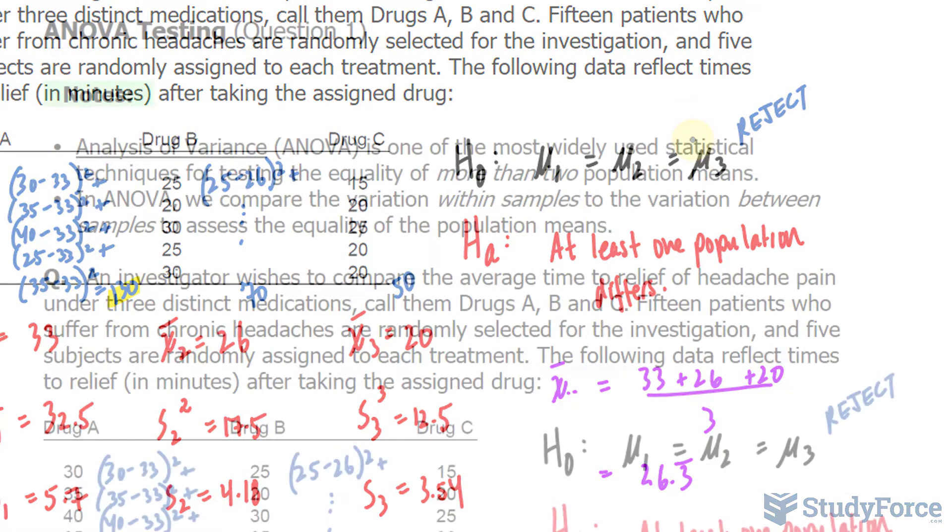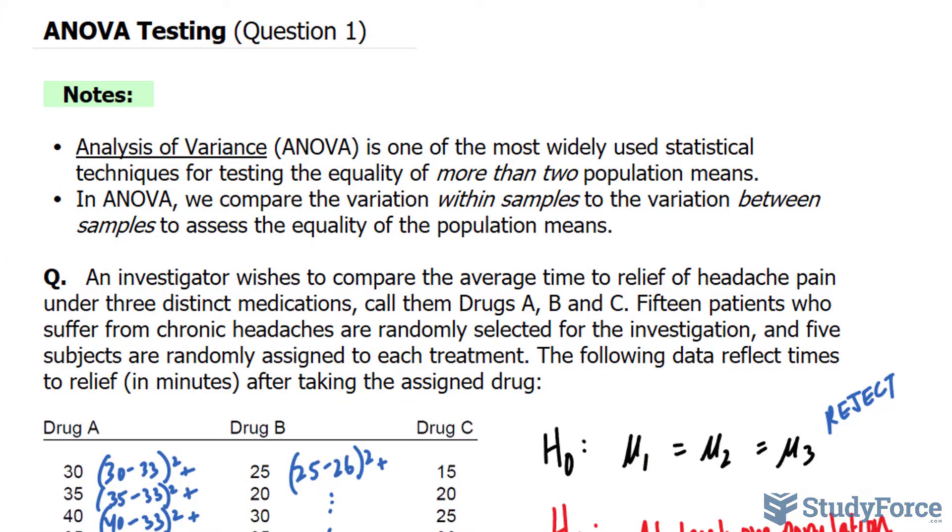And so there you have it. That is how to use ANOVA testing to determine if two or more populations differ.